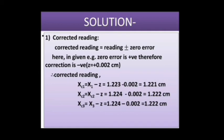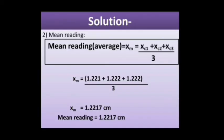Step 1: corrected reading = reading ± zero error. Here, zero error is positive, therefore the correction is negative. The corrected readings are as shown in the slide. Step 2: mean reading xm = (xc1 + xc2 + xc3) / 3, which gives a mean reading of 1.2217 cm. Step 3: the absolute error is the difference between the corrected reading and the mean reading.